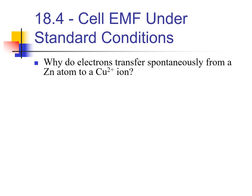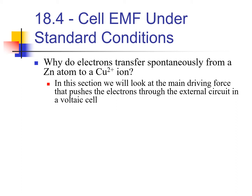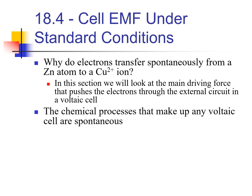Here in section 18.4, we look at cell EMF — one of the most critical calculations in this chapter. Why do electrons transfer from zinc atoms to copper ions? What's causing those electrons to move through the external circuit in the voltaic cell? The chemical processes that make up any voltaic cell are spontaneous. If you are told it's a voltaic cell, the reaction is spontaneous — that is a definition.